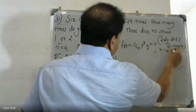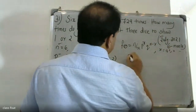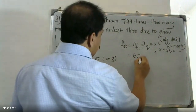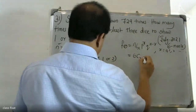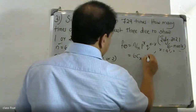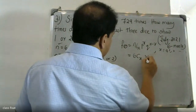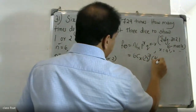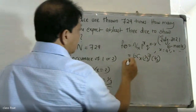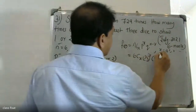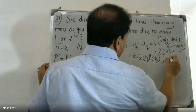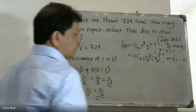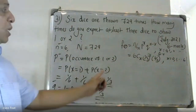With P equal to 1/3 raised to X, and Q equal to 2/3 raised to 6 minus X, where X equals 0, 1, 2, etc. This is the binomial distribution.